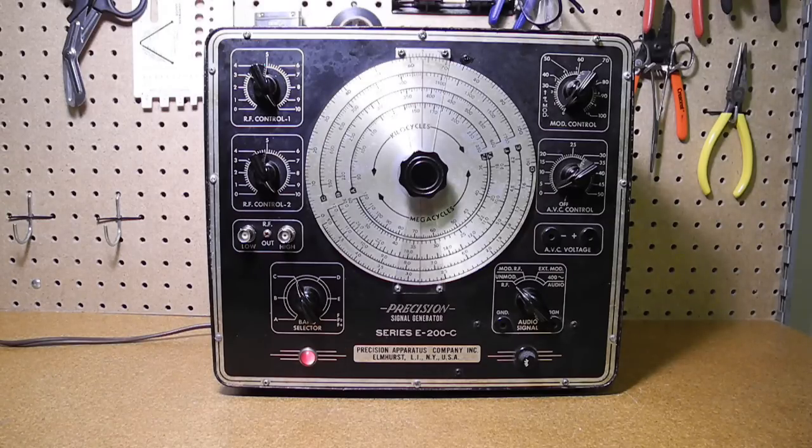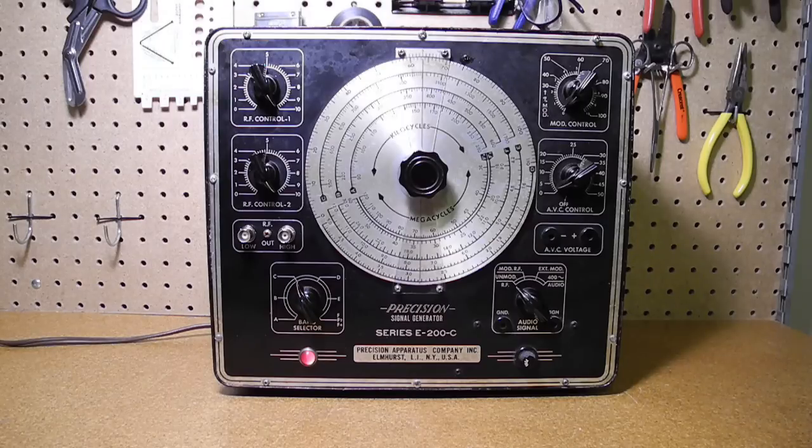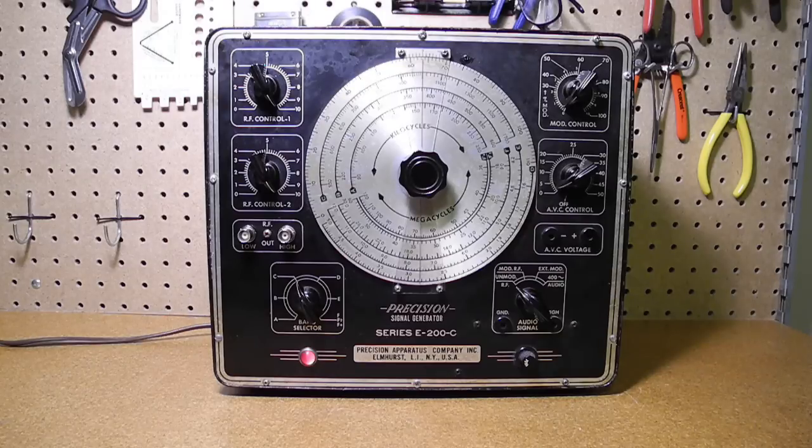On my unit, the 6C5 tube was replaced by a 6J5GT. Someone wrote on the chassis with a grease pen, OK, December 6, 76. I suspect this was the gentleman who gave it to me since the date was not long before I got it.